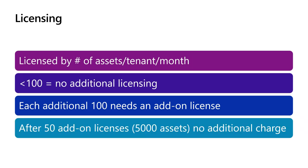The number of add-on licenses that you have to buy is capped at 50. So if you have 5,000 assets, you can keep having more assets — you just don't have to keep buying licenses after you hit 50. So 50 is the max number of licenses, but it's not the max number of assets. You can still have over 5,000 assets.